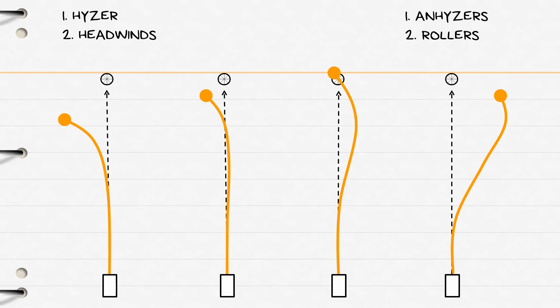A third great option for discs giving you an understable flight pattern are throws with supporting tailwinds because the tailwind will cause the disc to fly in a more overstable pattern transitioning it to something much more like your max distance flight.